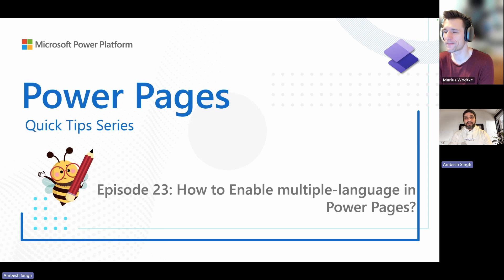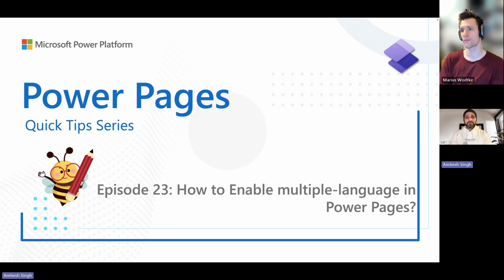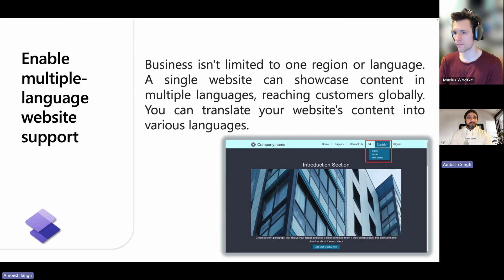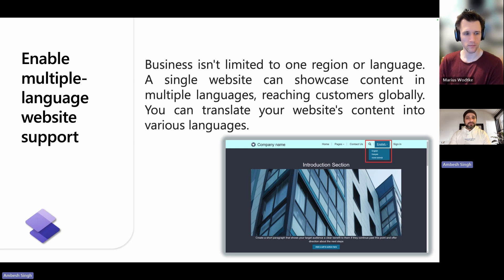Greetings everyone. I'm Amba Singh and today I'm with Mayas for episode 23 of the PowerPages Quick Tip Series. In this episode, we are going to explore how to enable multiple languages in PowerPages. Enabling multiple language support in PowerPages allows you to reach a global audience by displaying your website content in various languages. These features help you translate your site's content while maintaining a single content hierarchy, ensuring consistency and ease of management.